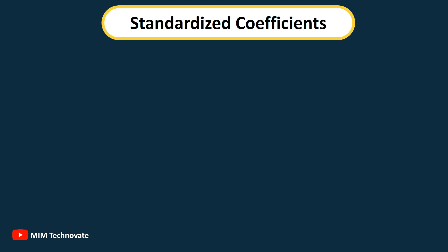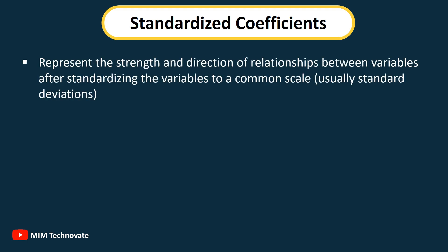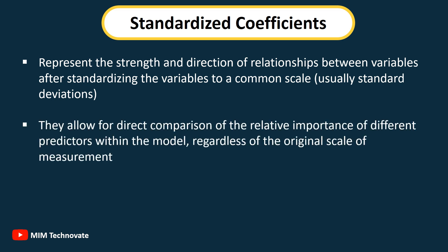Standardized Coefficients: Represent the strength and direction of the relationship between variables after standardizing the variables to a common scale, usually standard deviations. They allow for direct comparisons of the relative importance of different predictors within the model, regardless of the original scale of measurement.